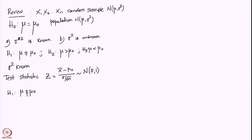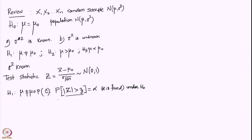Since Z has no unknown parameters, it is a completely known distribution. For the alternative that mu is not equal to mu-zero, the critical region can be defined such that the probability of |Z| greater than some value z-alpha equals alpha under H0 — where alpha is fixed as the Type I error.